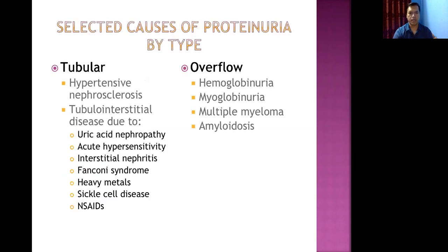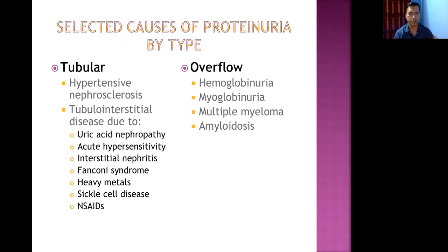Tubular causes of proteinuria include hypertensive nephrosclerosis — chronic kidney damage from hypertension causing fibrosis. Other tubulo-interstitial diseases include uric acid nephropathy, acute hypersensitivity disorders, Fanconi syndrome, heavy metal damage, sickle cell disease, and chronic NSAIDs, which can damage both glomeruli and tubules.